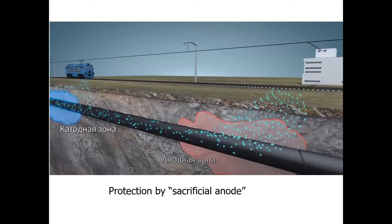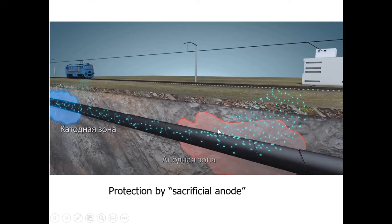The Russian video also highlights a risk: if the pipe is close to a high-voltage railway line, stray currents from passing trains flow through the ground and can interfere with cathodic protection, momentarily creating an anodic region near the pipe. Whether this is significant depends on train frequency and proximity to the railway, but the concept is important.